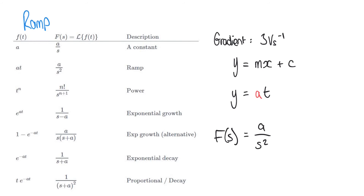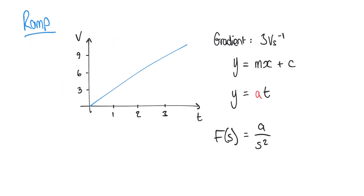The reason the gradient m was changed to a is just to keep it consistent with our other input types, referring to the constant in the form a throughout. For our example of the voltage ramp with a gradient of 3, the ramp function would be expressed as 3 over s squared.